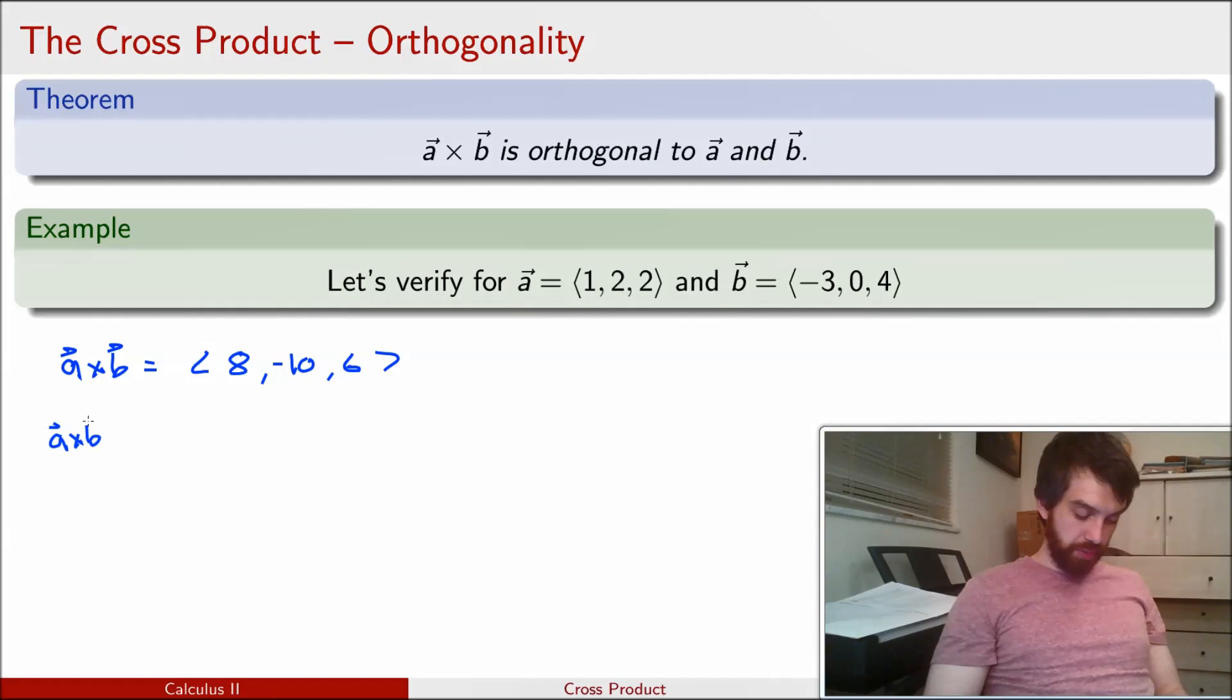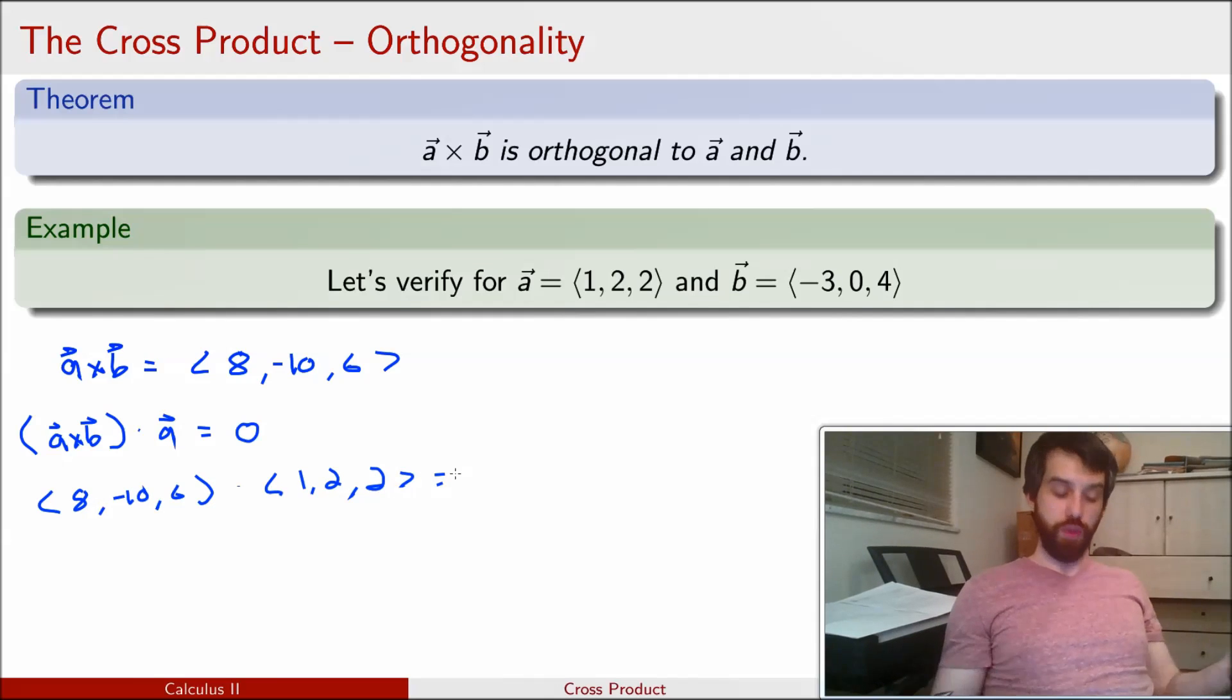So I want to show a cross b, I'll put it in brackets, dotted with a is just equal to 0. So let's see whether this is the case. I'm going to write out a cross b, so this is again my 8 minus 10, 6. I'm going to dot it with my a vector, which is 1, 2, 2. And then I'm going to remember that the way the dot product works is it looks at the product of the first two components. So that's 8 times 1. And then it looks at the product of the second two components, which is going to be minus 10 times 2. And then it looks at the product of the third components, which is going to be 6 times 2. So in other words, this is 8 minus 20 plus 12. And indeed this is equal to 0. I can also check the other side.